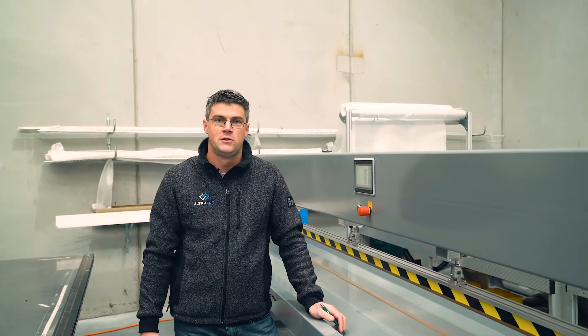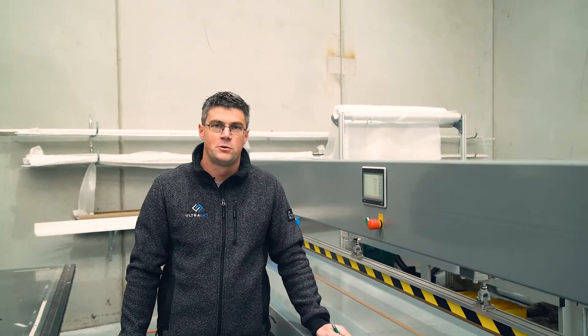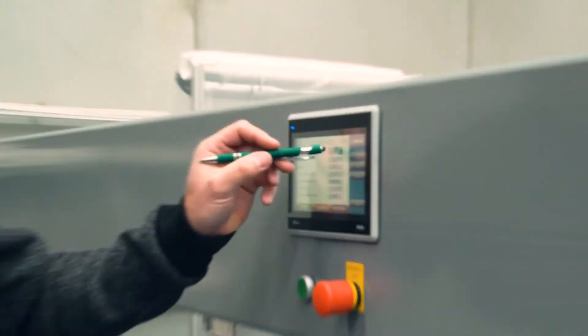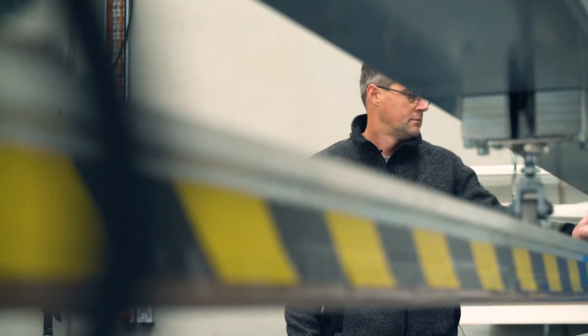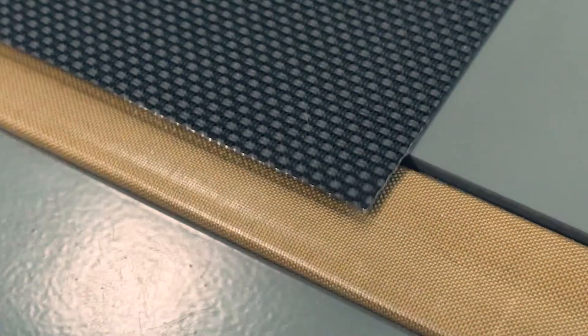We've also included an easy to use joining system. This works for 10 and 20 mil welds. You can see here the stoppers lift up on each side to give the operator a fixed guide to assist in perfect joins.